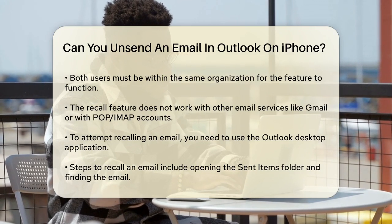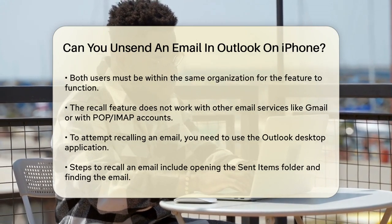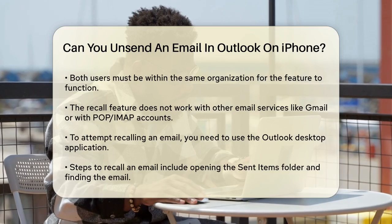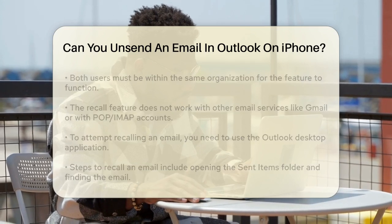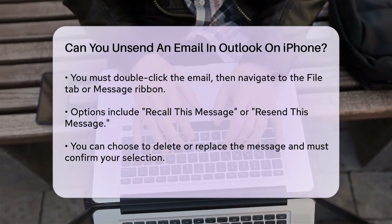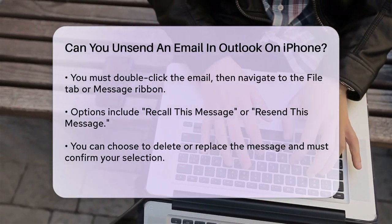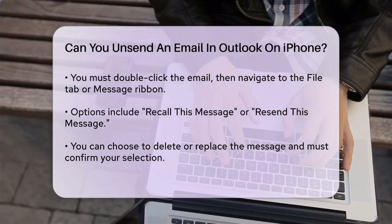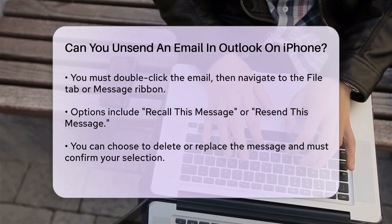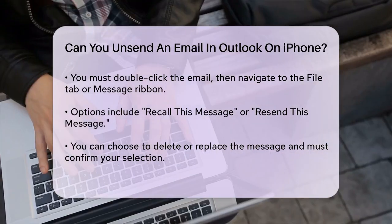Open the Outlook app on your desktop and go to the Sent Items folder. Find the email you want to recall and double-click to open it. Go to the File tab or the Message ribbon and look for the Recall this message or Resend this message option. Choose to delete the message or replace it with a new one, then confirm your selection.